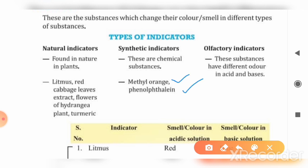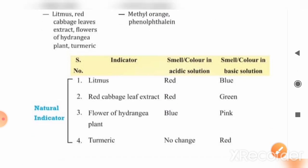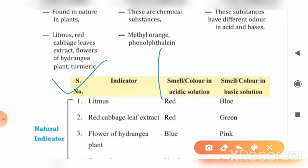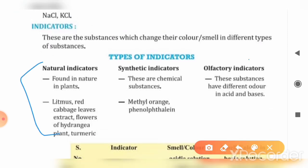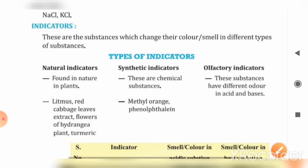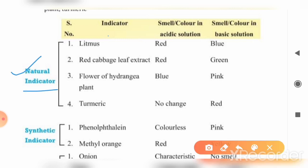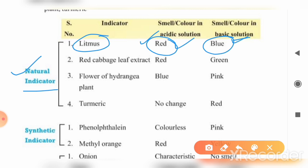You will hear the names methyl orange and phenolphthalein a lot from your science teacher — these are very basic dyes used in chemistry experiments. When litmus is in acidic solution, it will show red color. In basic solution, it will show blue color. This is how litmus works as an indicator.